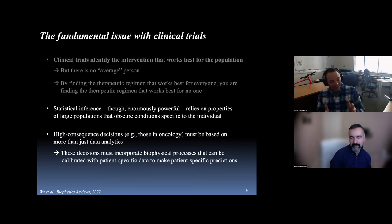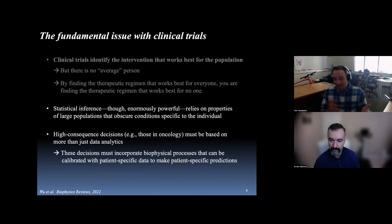So at the risk of being overdramatic, by finding the therapeutic regimen that works best for the population, for everyone to some degree, you're really finding the therapeutic regimen that's going to work best for no one. But we can't throw statistical inference out the window. It's enormously powerful, but it does rely on properties of large populations that obscure conditions specific to the individual. And this is an enormous problem for high consequence decisions like oncology, where the patients are so heterogeneous in both space and time.